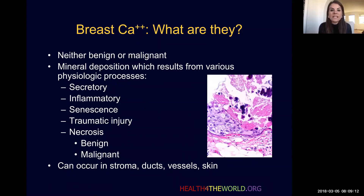Calcifications can occur anywhere within the breast — in stroma, the ducts, the vessels, and the skin.